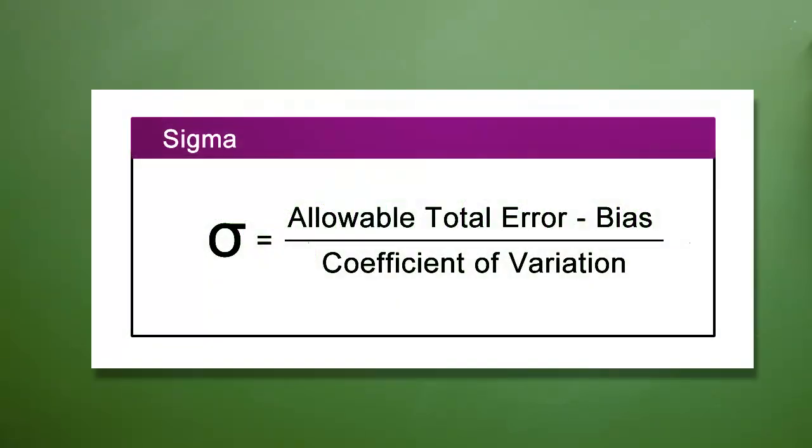Subtract your bias from the allowable total error, then divide by the coefficient of variation. We recommend viewing our previous videos if you're not familiar with the concepts of TEA, bias, or CV.